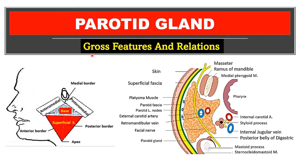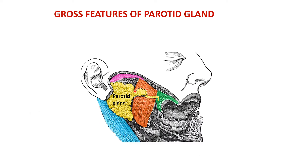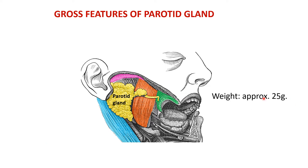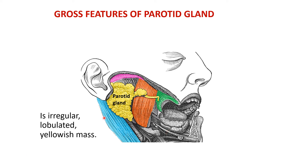This video is on gross features and relations of the parotid gland. The parotid gland is located on the side of the face, below and in front of the external ear. It is the largest of the three salivary glands — submandibular, sublingual, and parotid. It weighs approximately 25 grams and is an irregular, lobulated, yellowish-creamy mass.